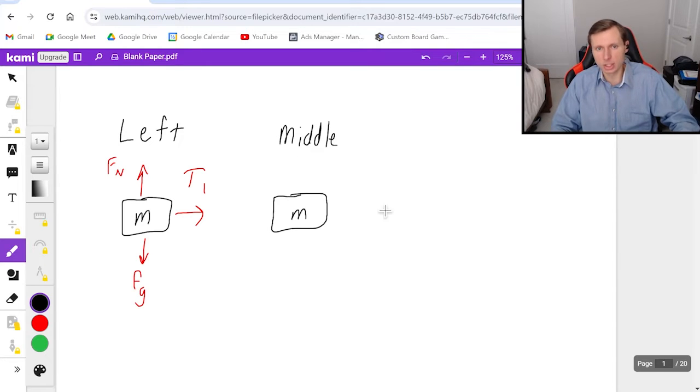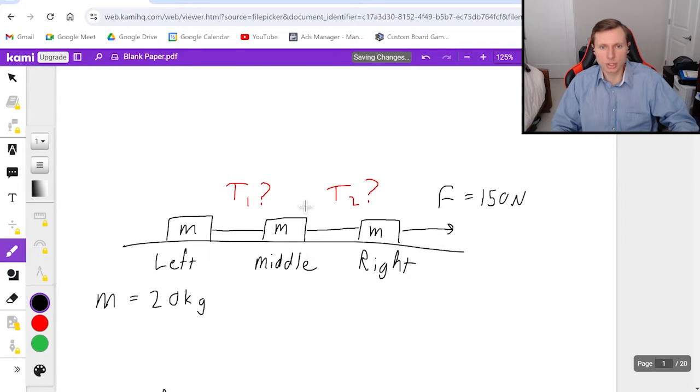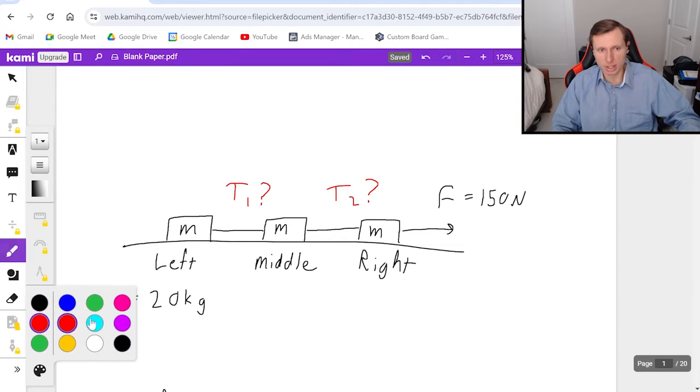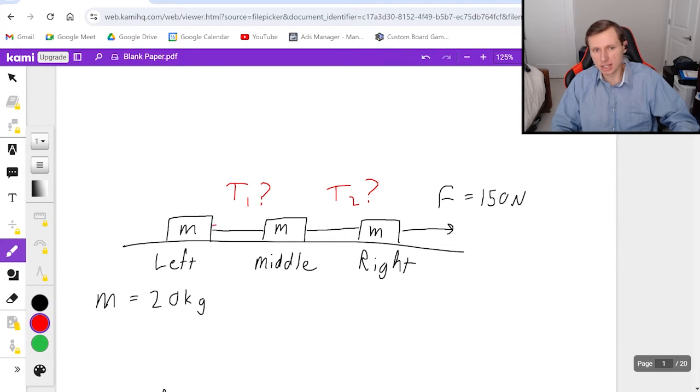Next, for the middle box, there's a force to the right, it's T2, and there's a force to the left, it's T1. Maybe you don't realize this, but technically T1 is pulling both ways, to the right on the left box and to the left on the middle box. That is because of Newton's third law, and these forces are equal to each other. They're both T1.